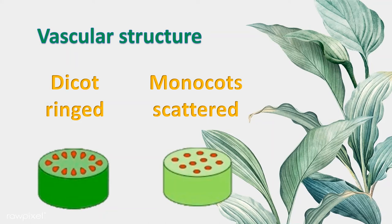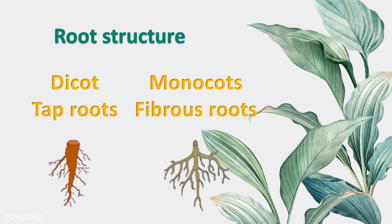Next is their roots. The dicot has a tap root, which is one big root with smaller roots branching off, while the monocot has fibrous roots, which widely spread around the ground.